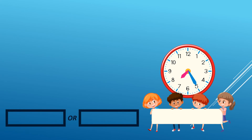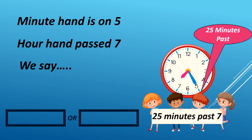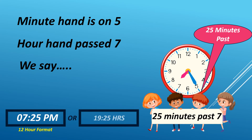When the minute hand is on 5 and the hour hand passed 7, we say 25 minutes past 7. It can either be AM or PM. For example, it is 7:25 PM in 12-hour format. We read it as 1925 hours in 24-hour format.